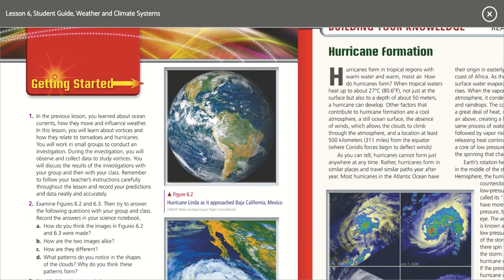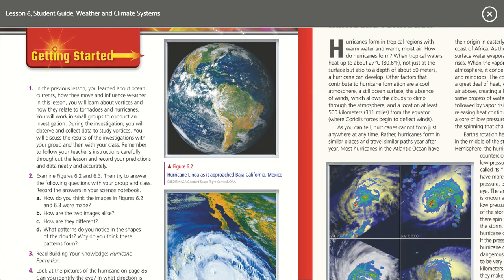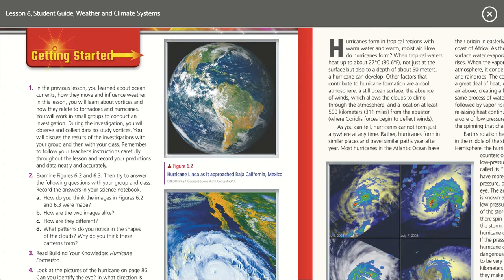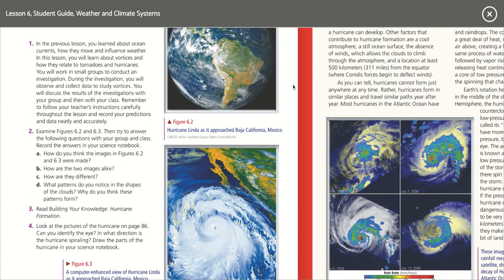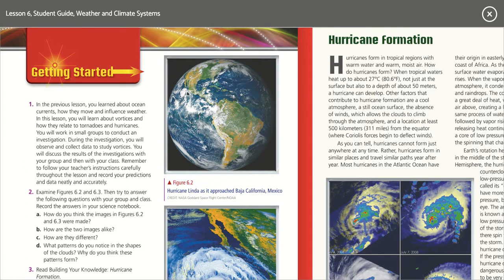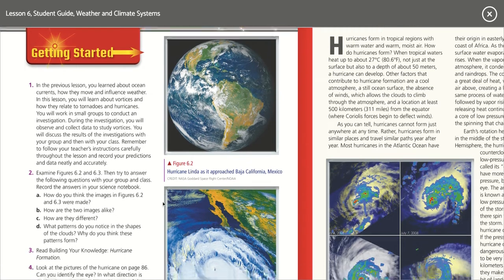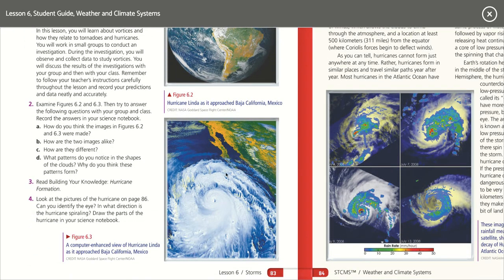Number two: examine figures 6.2 and 6.3, then try to answer the following questions. Let's just discuss this and see how we do. Figure 6.2 looks like a zoomed-out picture of the Earth, and 6.3 is going to be way over here — or possibly up here; it's difficult to tell. This clearly looks zoomed in, and this is the Baja of California. So it was that first one mentioned in the picture above — this is the zoomed-in image.